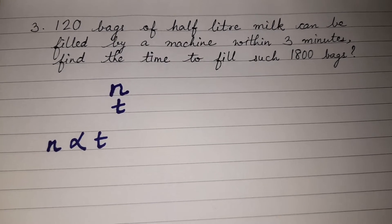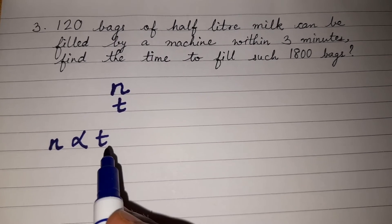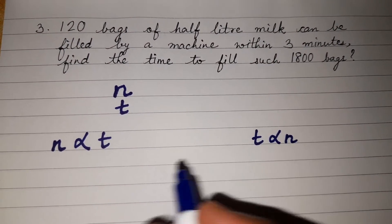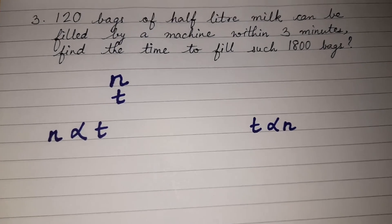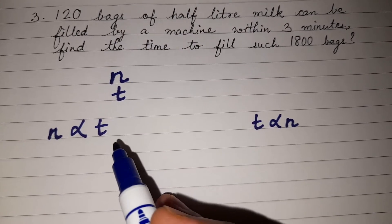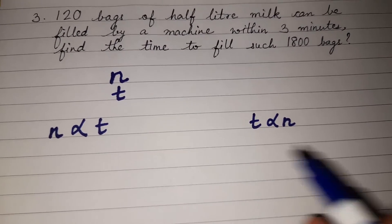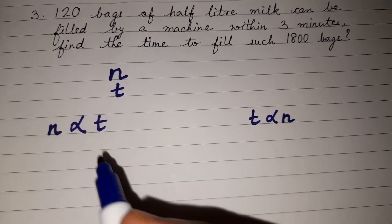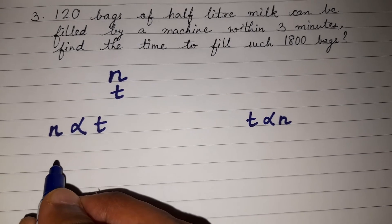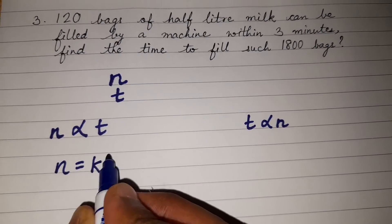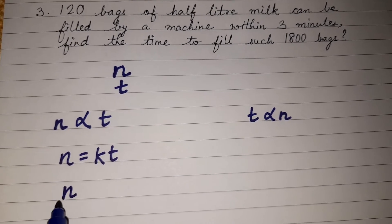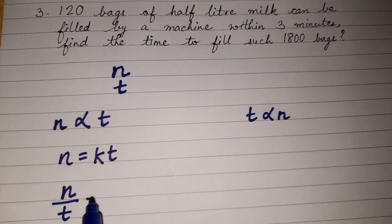Some students may get confused whether to write n directly proportional to t or t directly proportional to n. If you solve both ways, you will get the same answer. We will solve by both methods. Since n is directly proportional to t, we can write n = kt, where k is the constant of proportion, which gives us n divided by t equals k.